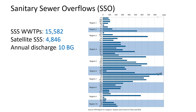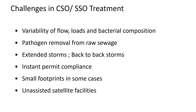For sanitary sewer overflows, there are more than 15,000 wastewater treatment plants and more than 4,000 satellite sanitary sewer systems, with an annual overflow discharge of 10 billion gallons into the waterways. CSO and SSO treatment presents a big challenge because of the variability of flows, loads, and bacterial composition. The first flush can include much higher TSS, solids, and pathogens — all kinds of runoff — presenting a challenge to constantly adjust to influent changes.